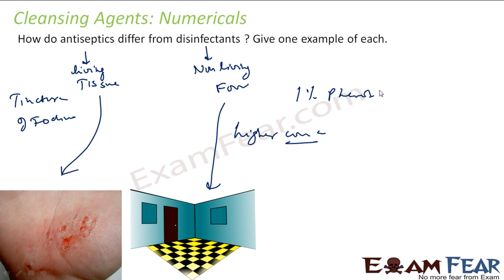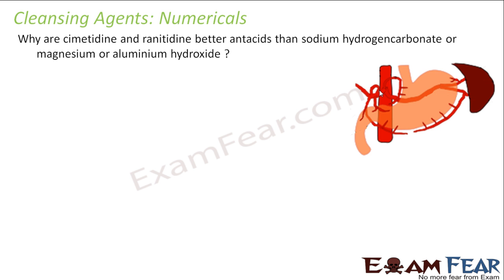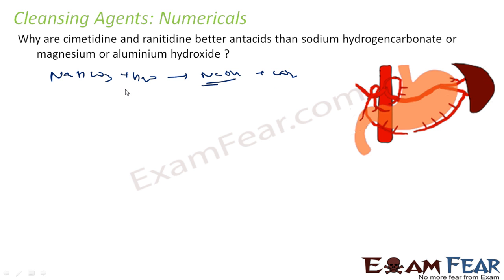Why are cimetidine and ranitidine better antacids than sodium hydrogen carbonate, magnesium hydroxide, or aluminium hydroxide? When sodium hydrogen carbonate reacts with water it gives sodium hydroxide and carbon dioxide. This NaOH makes the stomach basic, and an increased quantity makes it even more basic, causing the stomach to produce more HCl and pepsin, making the acidity problem worse.